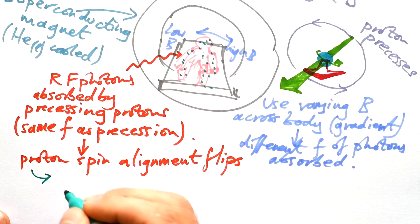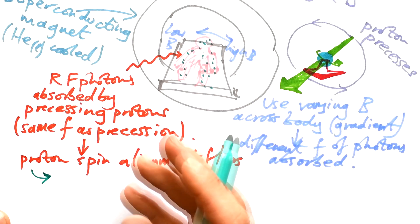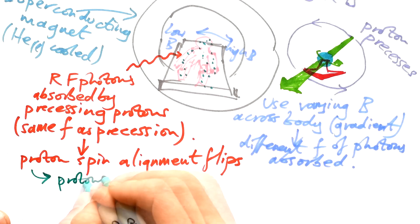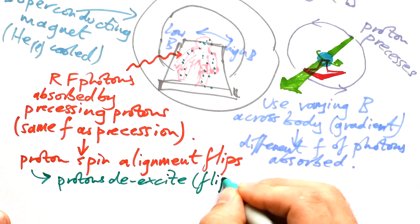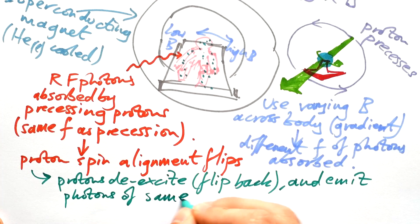So finally, once these are all spinning in opposite directions, what happens? Well, we stop the photons going in and then the protons de-excite. That means they flip back to where they were originally, and they emit photons of the same frequency that they absorbed to begin with.